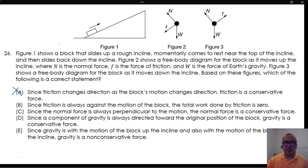B: Since friction is always against the motion of the block, the total work done by friction is zero. That is illogical, since the work is always going to be negative.